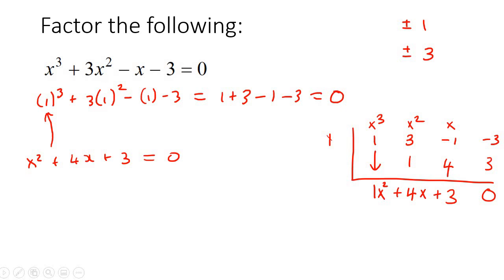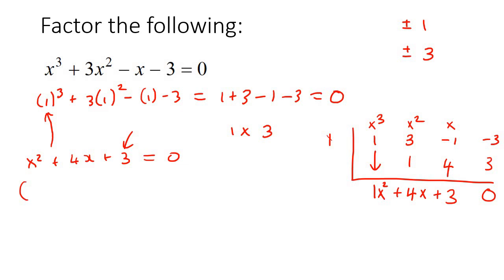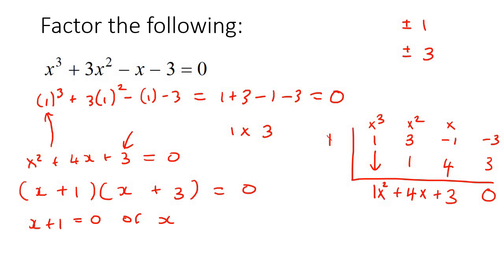That's a trinomial. Look at 3, which is the same as 1 times 3. Take that 1 and that 3 and make a 4 — you'd make two brackets and say x plus 1 and x plus 3. Solving: x plus 1 equals 0 or x plus 3 equals 0, so x equals negative 1 or x equals negative 3. And then your other answer is x equals 1. So there are your three answers.